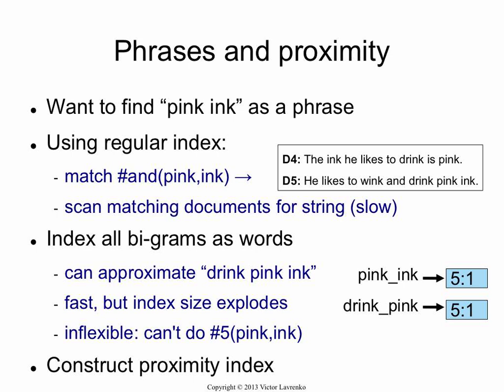So how can you do this? The cheap way to do this is to turn a phrase into a boolean AND. So you find all the documents that contain both the word 'pink' and the word 'ink' and then do a linear scan of them to see if the words occur as a phrase. This is what you would do if you had a vanilla search engine which doesn't support positional indices. This will work, but it is of course slow, because you're going to end up scanning all of those documents in the hope that some of them contain a phrase.